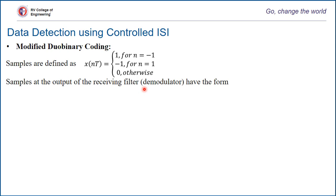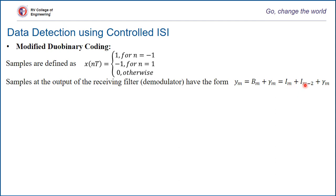Samples at the output of the receiving filter will have the form ym equal to bm. bm is a combination of two binary symbols — a duobinary combination — but the combination of alternate symbols: im and im minus 2. Unlike simple duobinary coding, which uses im and im minus 1. This is the key difference with modified duobinary.